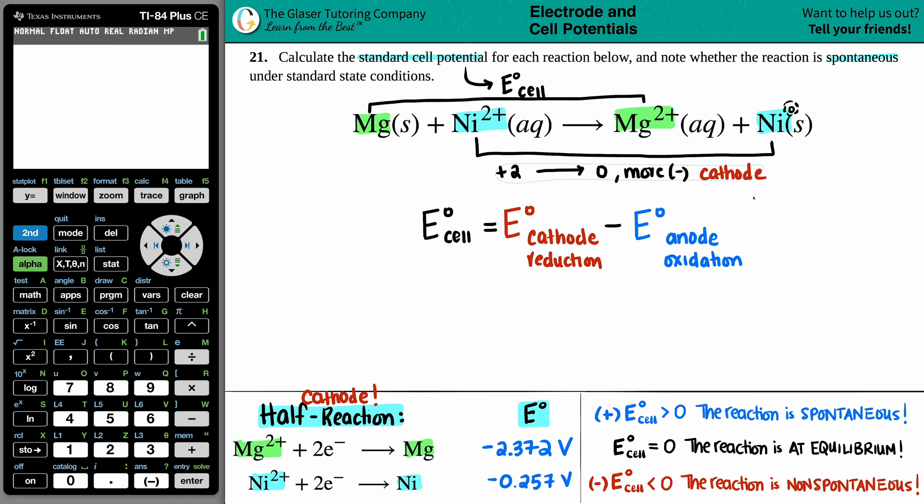On the flip side for the magnesium, you started off with no charge. So that's a zero. And you went to the two plus. Zero to plus two. And remember, this is becoming more positive. So more positive is always oxidation. That's the anode. So this has to be the anode.